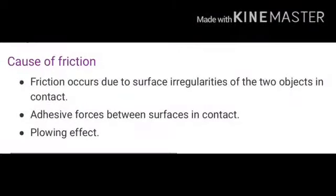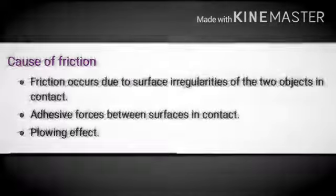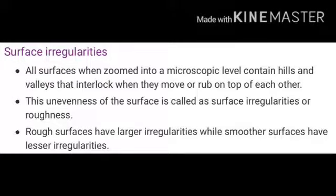Friction occurs due to the surface irregularity of the two objects in contact, and also due to the adhesive force between the surfaces in contact. All surfaces, when zoomed in at a microscopic level, contain hills and valleys that interlock when they move or are rubbed against each other. This unevenness of the surface is called surface irregularity or roughness. Rough surfaces have large irregularities while smooth surfaces have lesser irregularity.